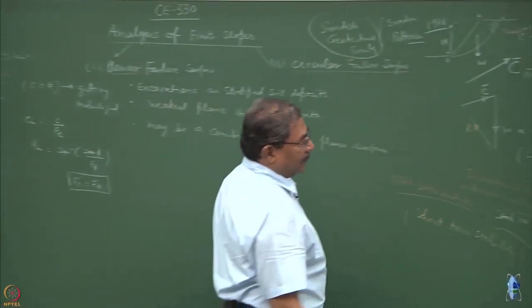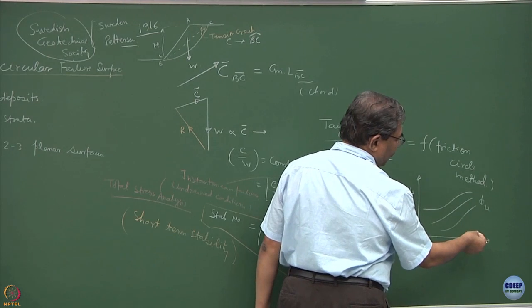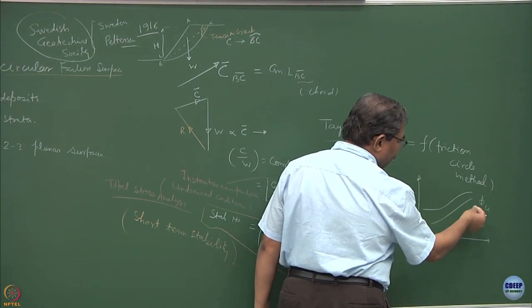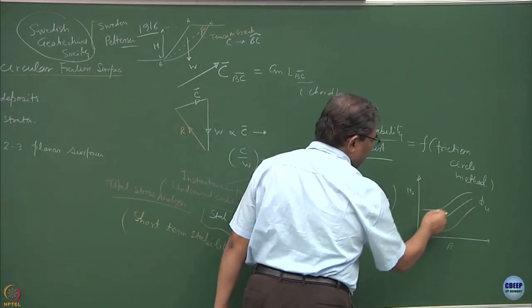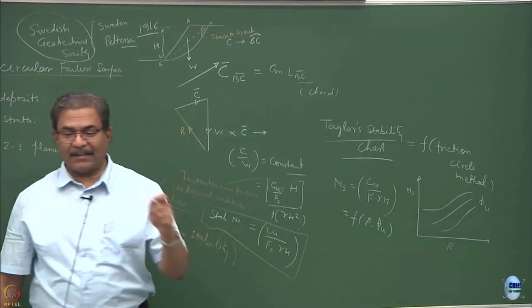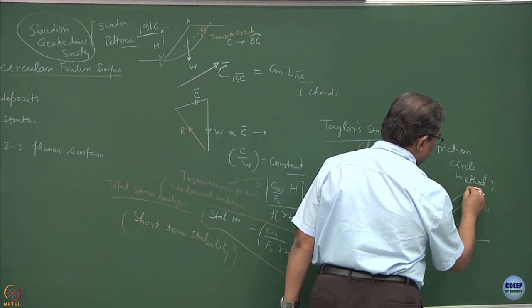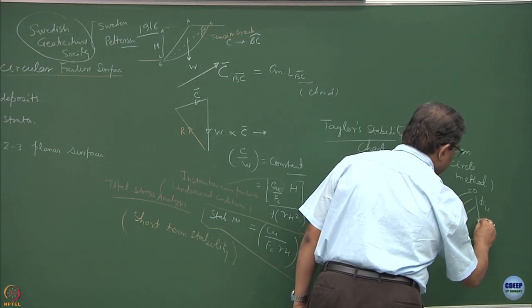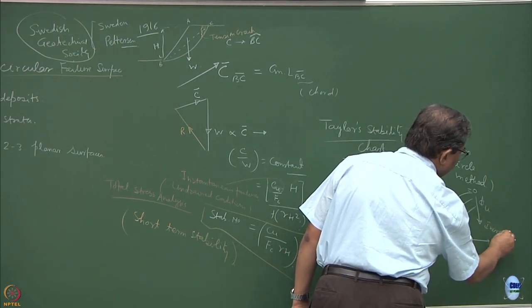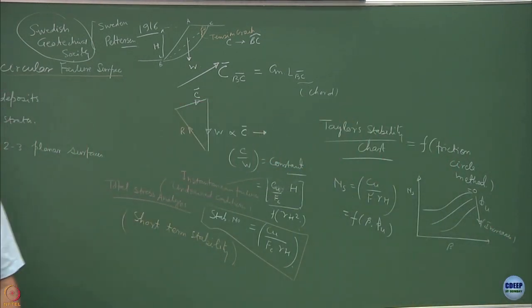That means even the steeper slopes can stabilize, can stand alone without any support if the friction angle is more. If the friction angle is less, you require less steeper slopes. For phi u equal to 0, there is a special condition. We will be discussing about this and normally the phi u increases in this direction. For phi u case, it would depend upon the depth factor.